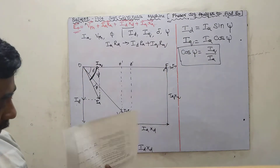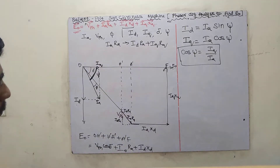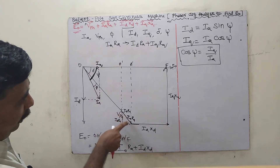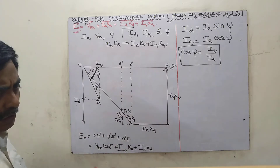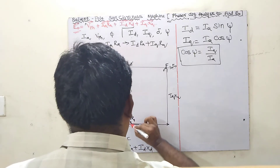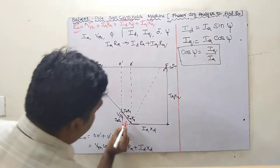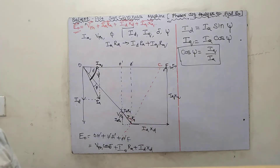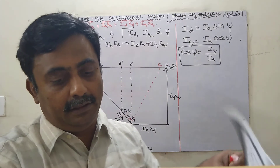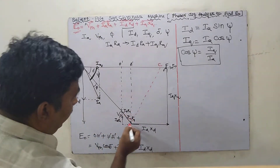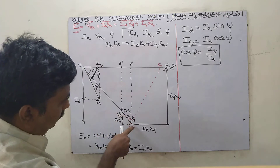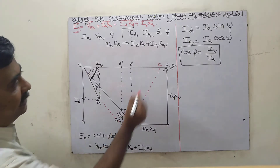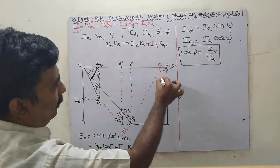We have the formula. Before that, I am drawing a line perpendicular to the IA axis. This perpendicular line meets at point C. Since IA and the reference line are parallel, the perpendicular line will also be perpendicular at that point. So this perpendicular line will meet at point C.